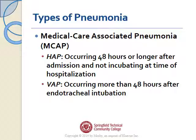Medical care associated pneumonia, or MCAP: hospital acquired pneumonia occurs 48 hours or longer after admission, indicating it wasn't incubating at the time of hospitalization. Ventilator associated pneumonia can occur more than 48 hours after endotracheal intubation — so if the patient had a breathing tube placed and two days later gets pneumonia, that's a VAP. There are financial penalties for VAPs, so certain bundles are put in place when a patient has an endotracheal tube to prevent pneumonia.